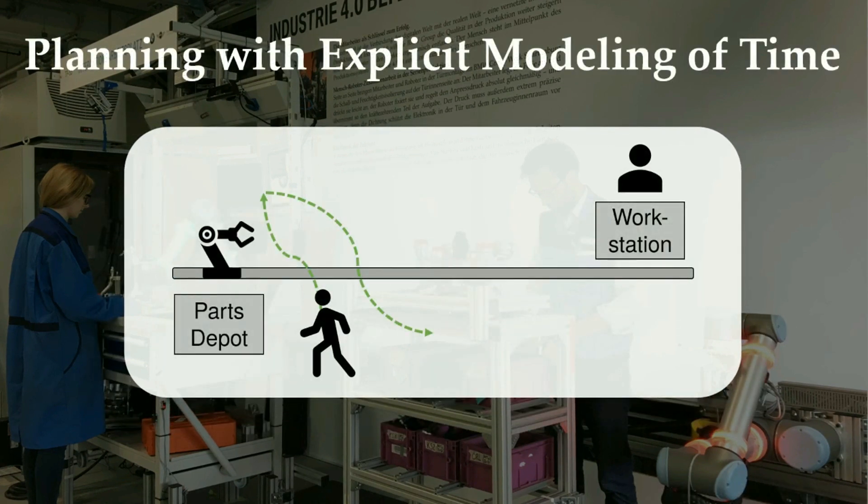Once the robot has both short-term and long-term predictions of human motion, it generates its motion with explicit modeling of time using the safe interval path planner.